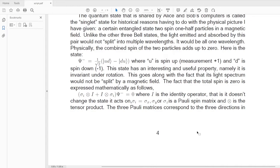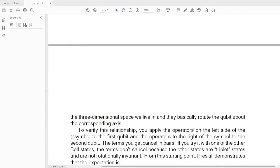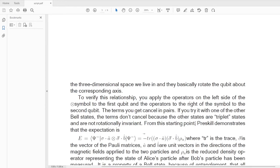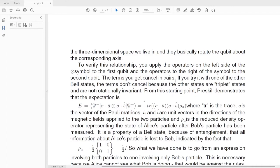Sigma I is sigma X, sigma Y, or sigma Z, Pauli spin matrices. And the X with the circle around it is the tensor product. The three Pauli matrices correspond to the three directions in the three-dimensional space we live in. And they basically rotate the qubit about the corresponding axis. To verify this relationship, you would apply the operators on the left side of the tensor product symbol to the first qubit, and the operators on the right side of this symbol to the second qubit. The terms you get cancel in pairs. If you try it with one of the other Bell states, the terms don't cancel because these states are triplet states. They have preferred directions. They are not rotationally invariant.